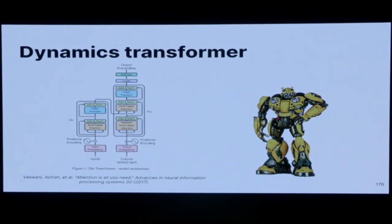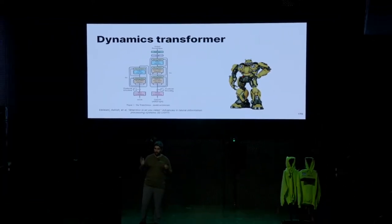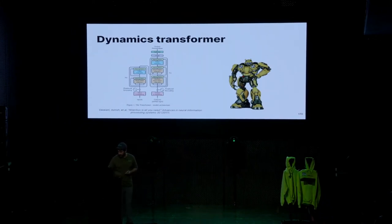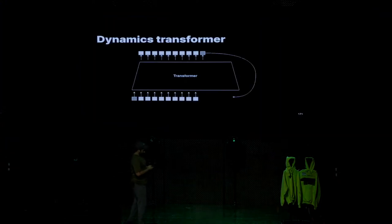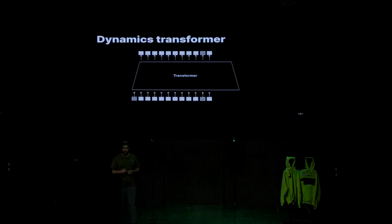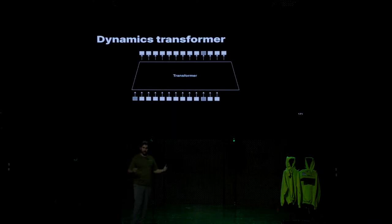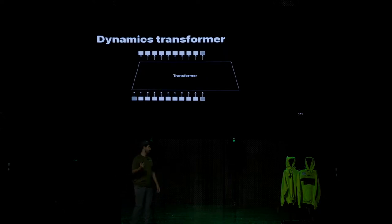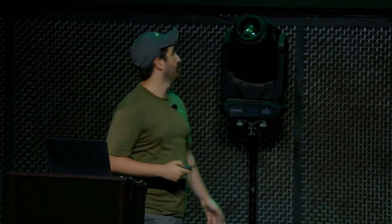The transformer is a fancy machine learning architecture that's a stack of fully connected layers and attention layers. We use this dynamics transformer one token at a time — autoregressive sampling. Each time we ask the model what the next token will be, we take that token, plug it back into the inputs, ask again what the next token would be, plug that back in, and do this until we reach a number of tokens that give us a frame. We repeat this as many times as we want until we reach whatever number of frames we want.